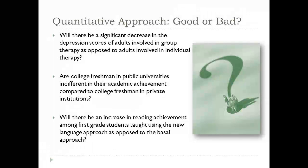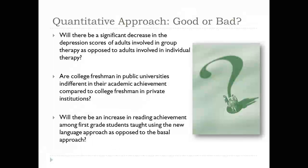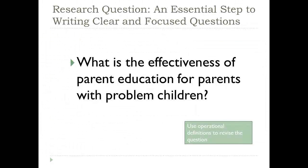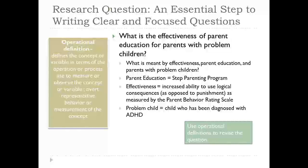Now let's take a poorly written question and make it better, making the characteristics of a good research question very literal. This example is derived from LaFontaine and Bartosz. The question posed is: 'What is the effectiveness of parent education for parents with problem children?' This is not a well-written, clear, and focused research question. Several concerns exist: what is 'effectiveness'? What is 'parent education'? And what is 'problem children'? By operationally defining these words, we can make the question more specific, clear, and focused. We're going to operationally define those unclear constructs and variables.